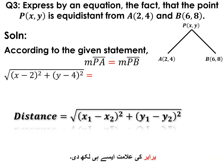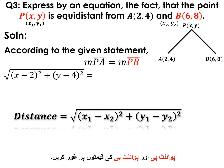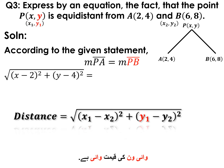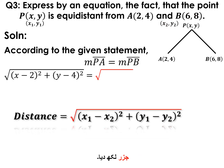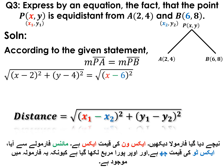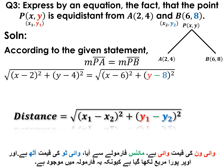Now consider the values of point P and point B. Here x₁ = x, y₁ = y, x₂ = 6, and y₂ = 8. Applying the formula on the right-hand side, we get √[(x − 6)² + (y − 8)²].